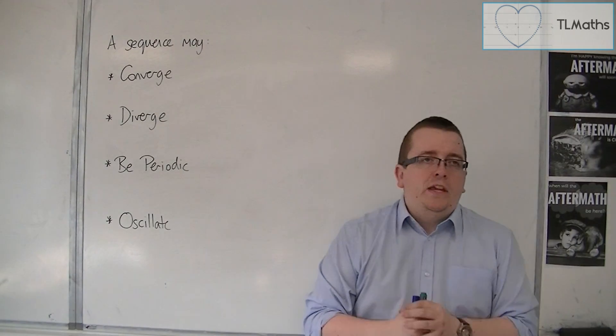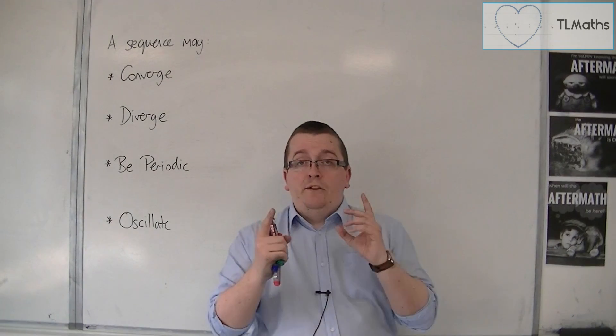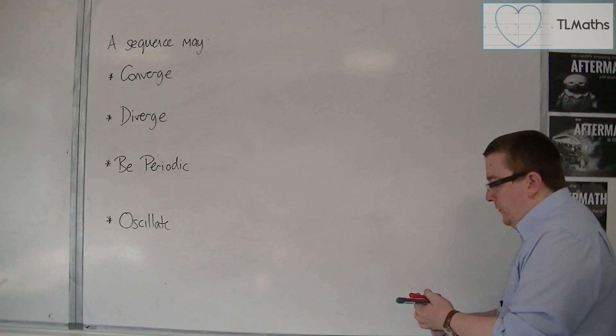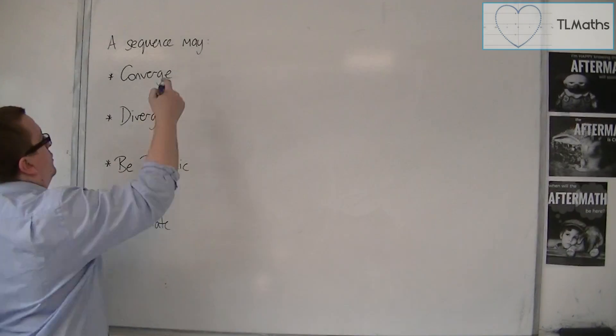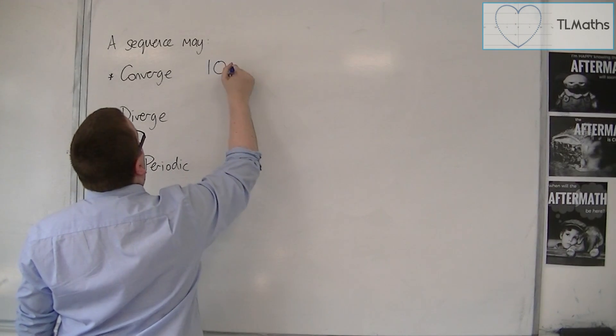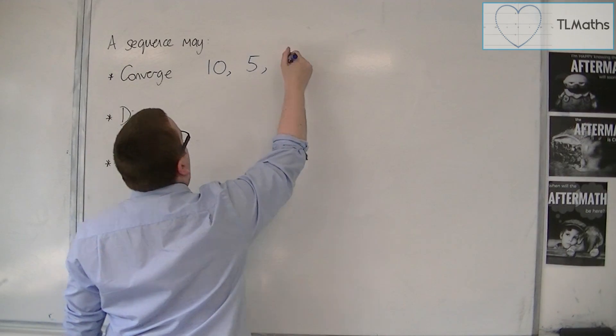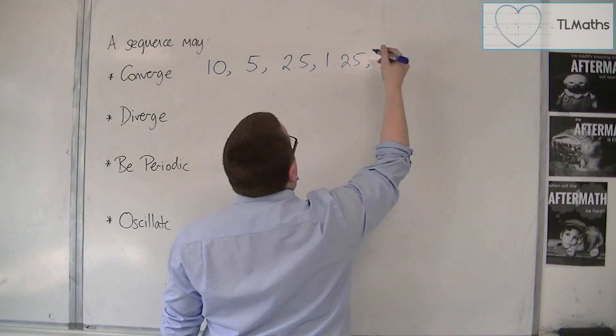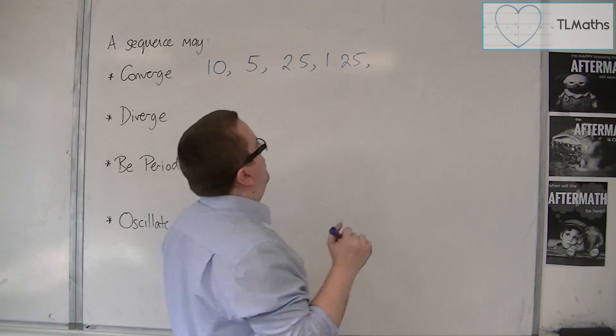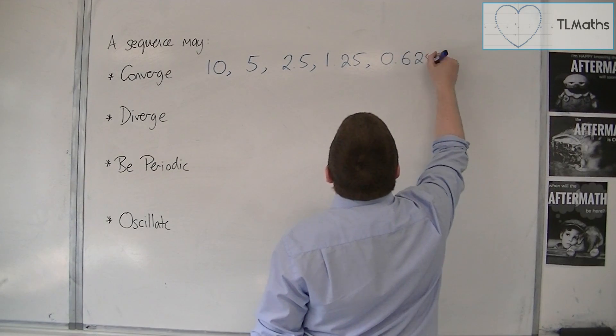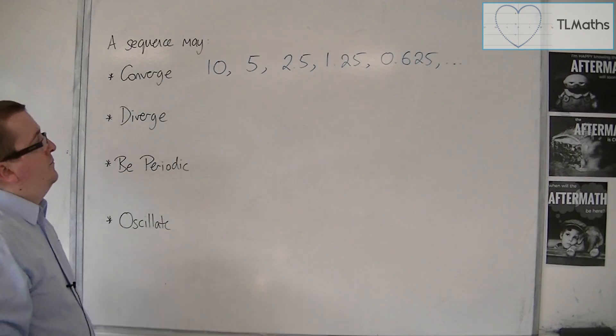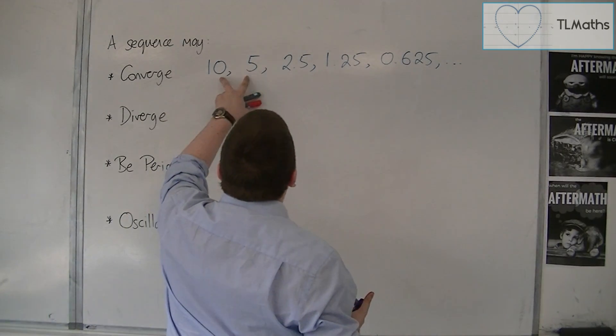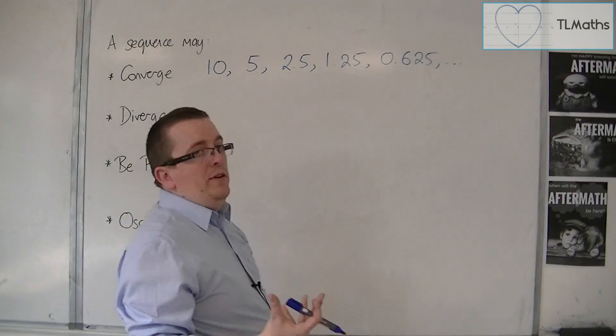Firstly, if a sequence is converging, that means that the difference between each of its terms is decreasing. For example, a converging sequence might look like this. You might start off with 10, and then it would be 5, and then it would be 2.5, and then 1.25, and then half of 1.25, so 0.625, and so on. This sequence is converging. Each number is halving each time, and you can see that the gap between each successive pair is decreasing.